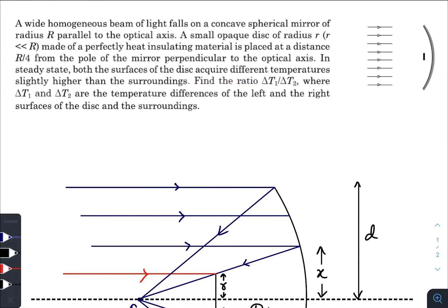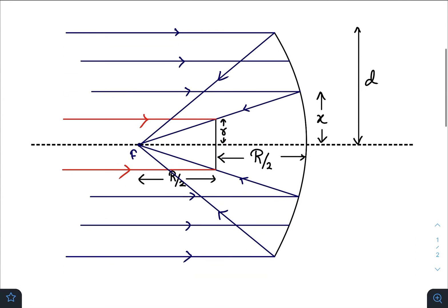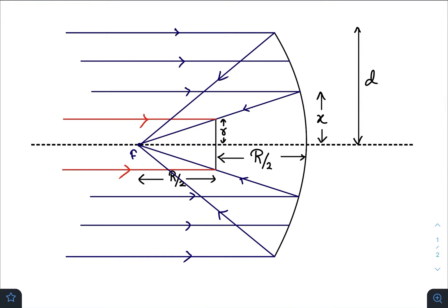I have already drawn the diagram for easy illustration and saving your time. As you can see, this is the concave mirror and the blue line indicates the rays.